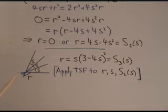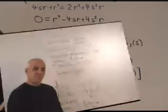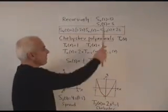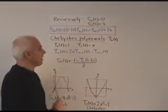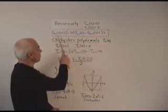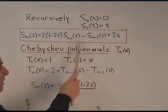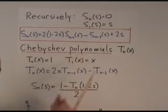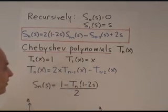Now let's have a look at some properties of the spread polynomials. The spread polynomials can also be defined recursively. That means we start off by defining s0 of s to be 0 and s1 of s to be s. And here's a recursive rule that says what sn of s is in terms of sn minus 1 and sn minus 2. So you can use this over and over, step by step, to generate all the spread polynomials.